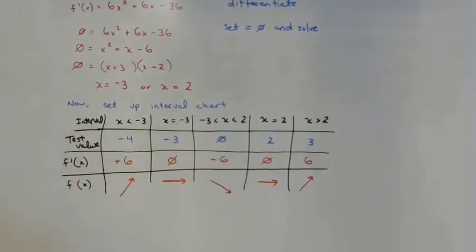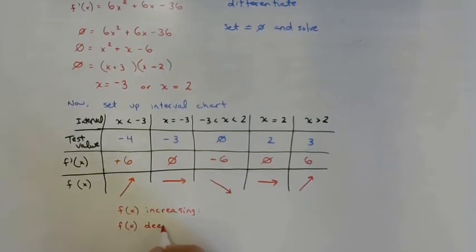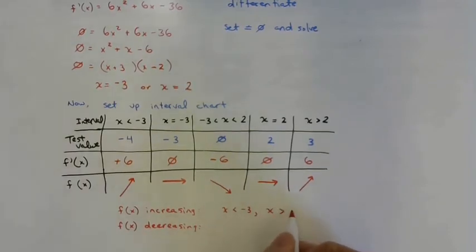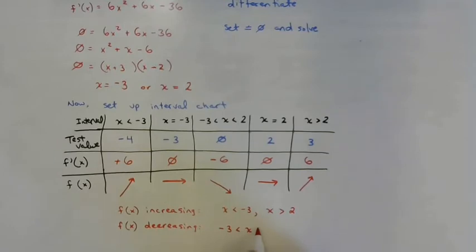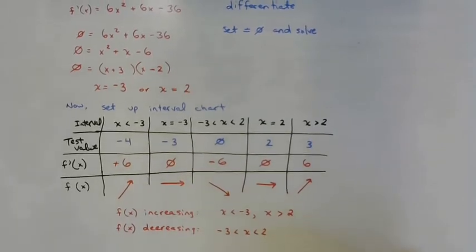To summarize: f of x is increasing when x is less than negative three and when x is greater than positive two. f of x is decreasing when x is between negative three and positive two. We could also go back and graph the derivative function or the original to see these intervals clearly.